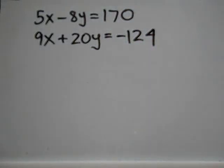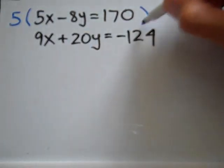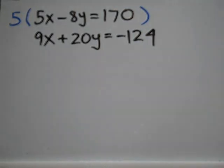Well, it's a matter of eliminating one of the variables. What I propose doing here is multiplying the first equation by 5 and the second equation I'll multiply by 2.